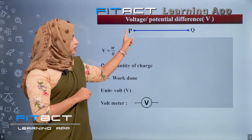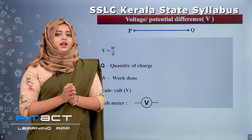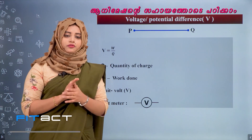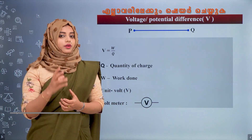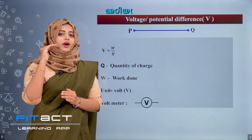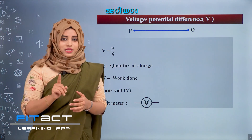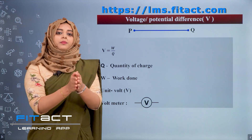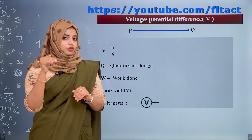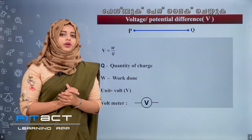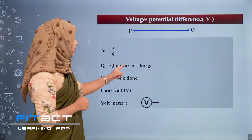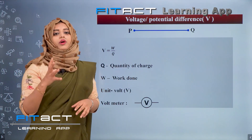Potential difference is denoted by the letter capital V. If 5 Joule of work is done to move one Coulomb of charge from one point to another, the potential difference between the two points will be 5 Volt. If 10 Joule of work is needed to move one Coulomb of charge, the potential difference will be 10 Volt. Similarly, 20 Joule divided by 2 Coulomb equals 10 Volt. That is, V equal to W divided by Q, where Q is the quantity of charge and W is the work done to move Q amount of charge.